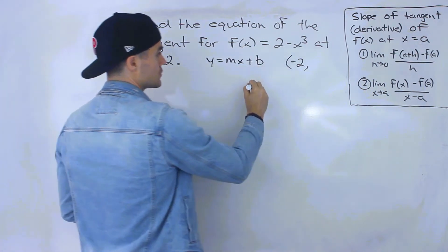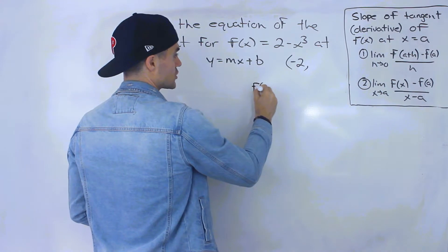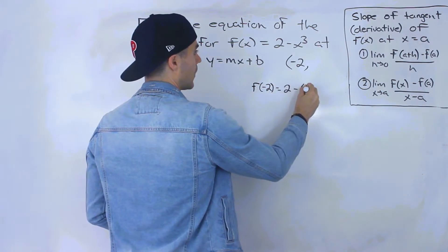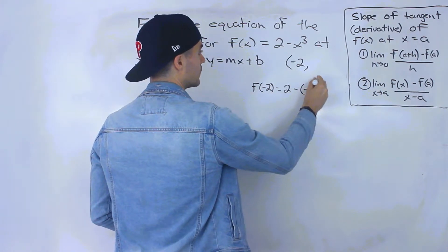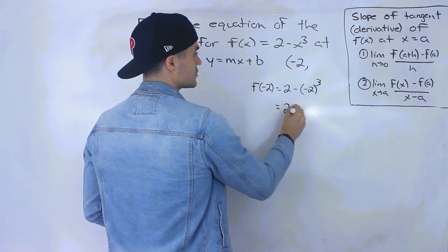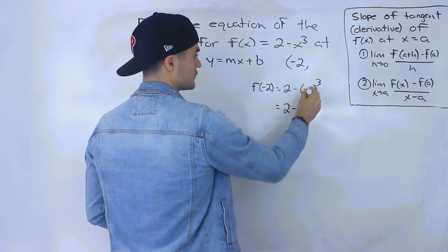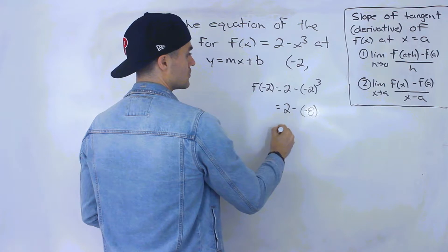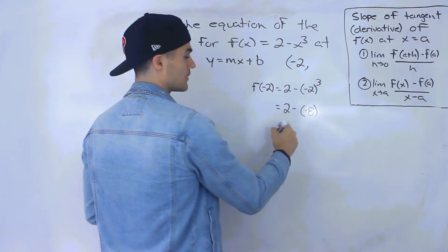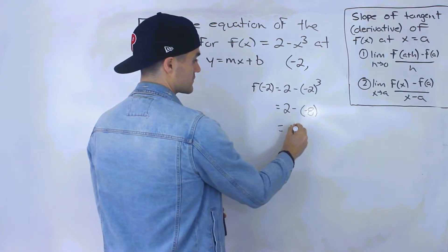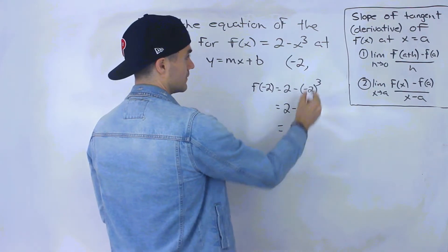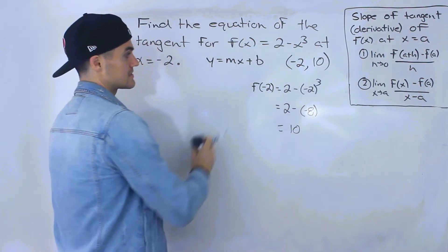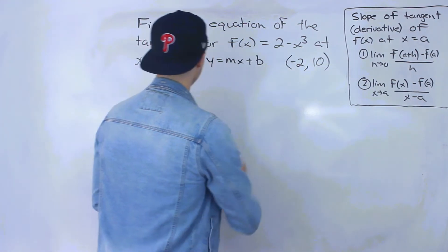We're also going to need that y value. So if I plug in negative 2 into the function, I get 2 minus negative 2 to the power 3, which is negative 8, and then 2 minus negative 8 is 2 plus 8, which gives us 10. So negative 2 and 10 is that full coordinate.